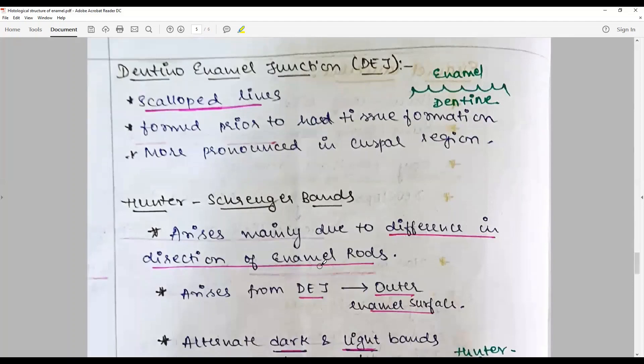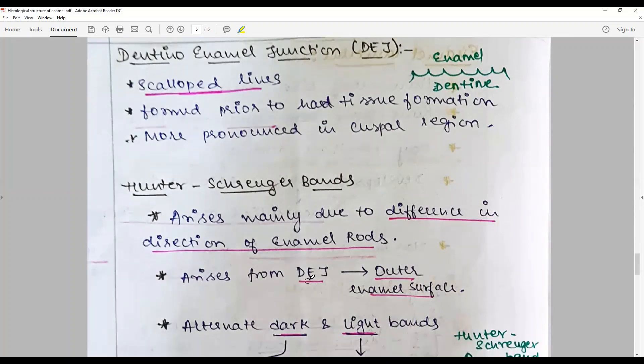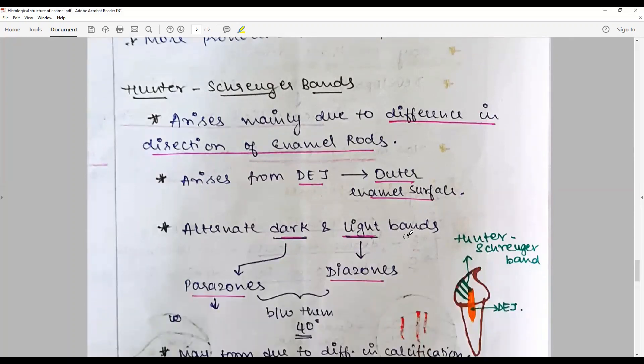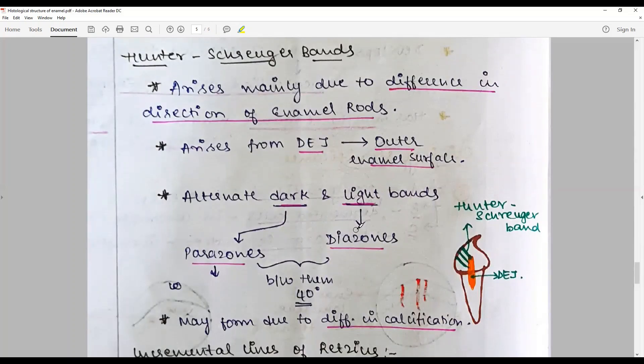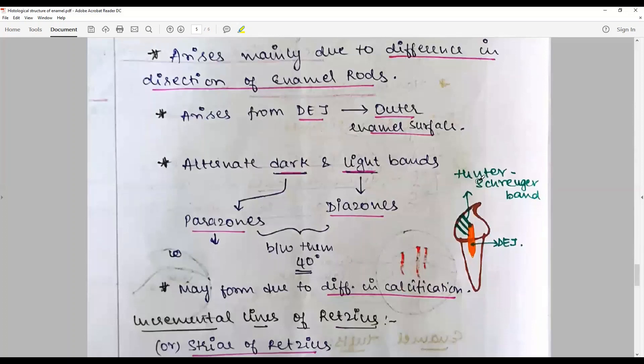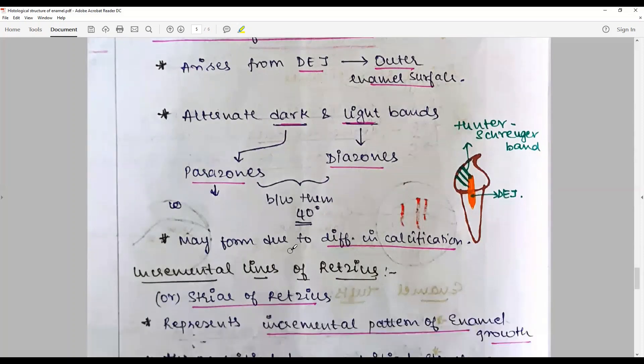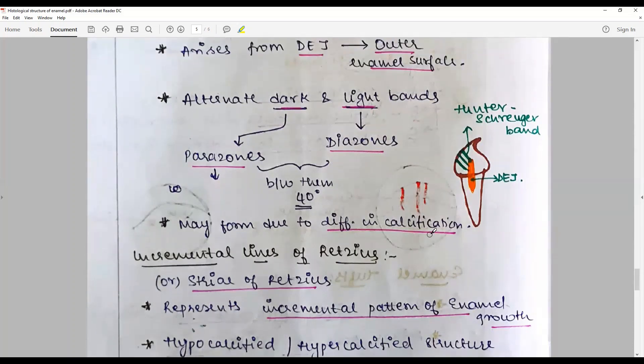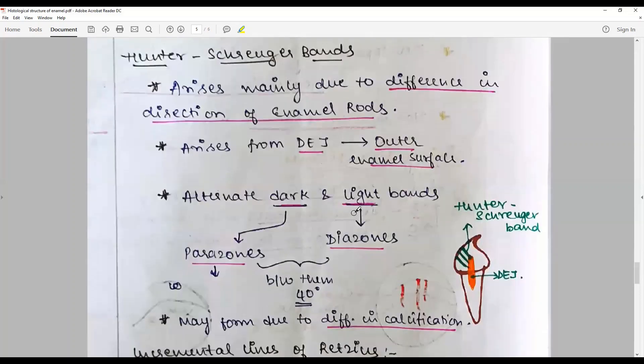Hunter-Schreger bands are another structure of enamel that arise mainly due to the difference in the direction of enamel rods and an optical phenomenon. They arise from the DEJ and extend towards the outer surface of enamel. They are seen as dark and light bands. The dark zones are referred as parazones, whereas the light bands are referred as diazones. They are seen in the longitudinal sections and between them they have a differentiation of about 40 degrees inclination. They may form due to the difference in the rhythmic pattern deposition of calcification. That is Hunter-Schreger bands. Here they could be representing hypocalcified and hypercalcified structures.